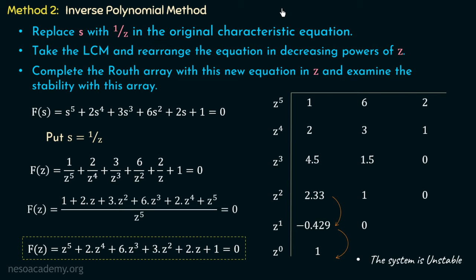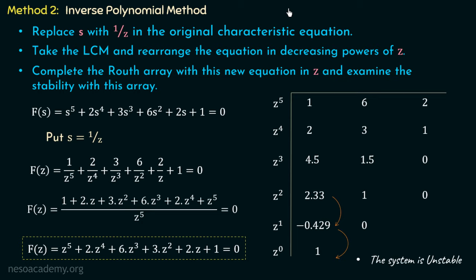In this lecture, we discussed Special Case 1 of RH criteria, where the first element of any row becomes zero, making the next element infinite so the Routh's test fails. We have two methods to overcome this: Method 1 substitutes a small positive number epsilon and examines stability by taking the limit ε → 0, and Method 2 is the inverse polynomial method, replacing S with 1/Z. In the next lecture, we will discuss more special cases of RH criteria.